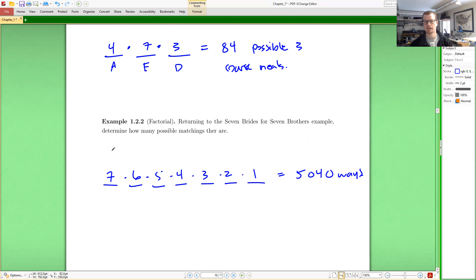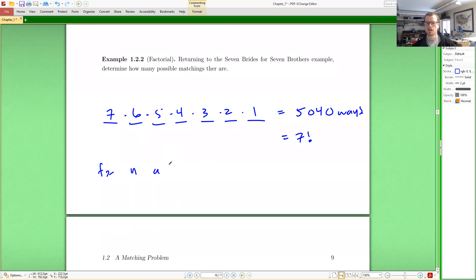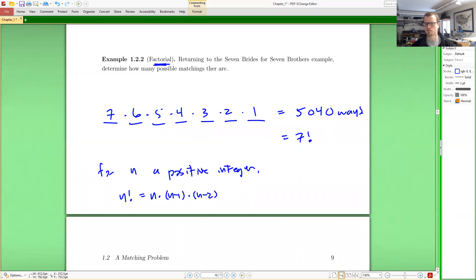Now, there's a special notation when we have seven times six times five times four times three times two times one. When there's any integer times all of the positive integers below it, this is seven factorial. So for n in general, if I want to describe this in general for n a positive integer, n factorial, that's what it's called factorial. n factorial is n times n minus one times n minus two times all the way down to multiply by three times two times one. If n is three, then of course, it's just three times two times one, but whatever n happens to be.